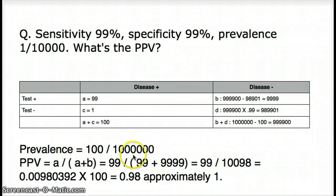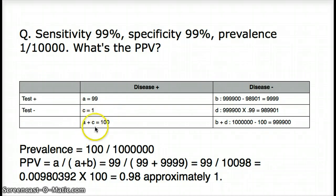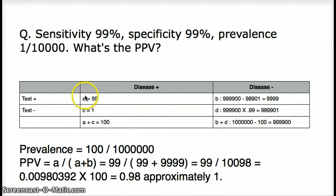So now I can say that 100 people out of a million are going to have this particular disease. Let's go back to our box here. We know that 100 people have the disease, which is the prevalence — so A plus C equals 100. Since the sensitivity is 99%, our A value is 100 times 0.99, which is 99. Once we have A and A plus C, we can easily find C, which is 100 minus 99 equals 1. That's the disease positive box.